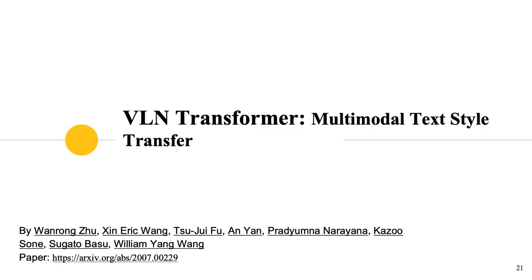All those image downstream tasks are inherently classification tasks. How about more complicated tasks like vision-and-language navigation? I'm going to introduce our work, the VLN Transformer. We propose multimodal text-style transfer to create a pre-training dataset and then pre-train a transformer model for vision-and-language navigation.